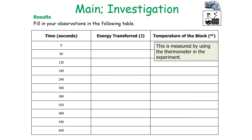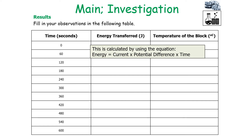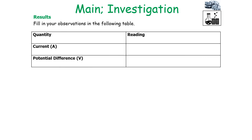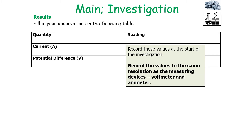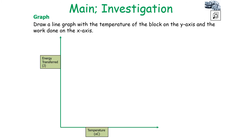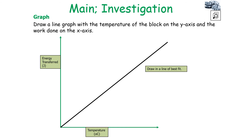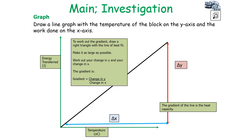Fill in your observations in the following table. The temperature of the block is measured using the thermometer, and values are recorded at the same resolution as the thermometer. The energy transferred equals voltage × current × time, and to make this easy with multiple resolutions you can round to the nearest whole number. Record the values of current and potential difference — which were taken at the start and assumed not to change — to the same resolution as the voltmeter and ammeter. Then draw a line graph with temperature on the x-axis and work done on the y-axis, with a line of best fit. The gradient of the line is the heat capacity, calculated as change in y over change in x using a triangle drawn as large as possible on the line of best fit.